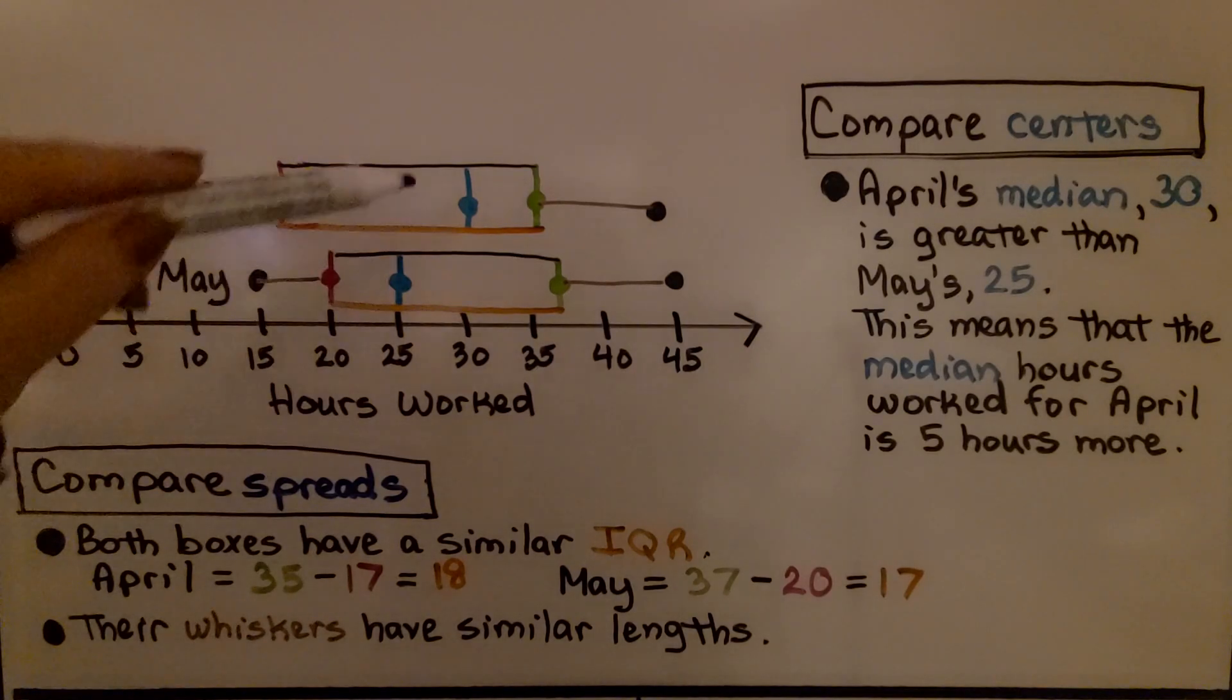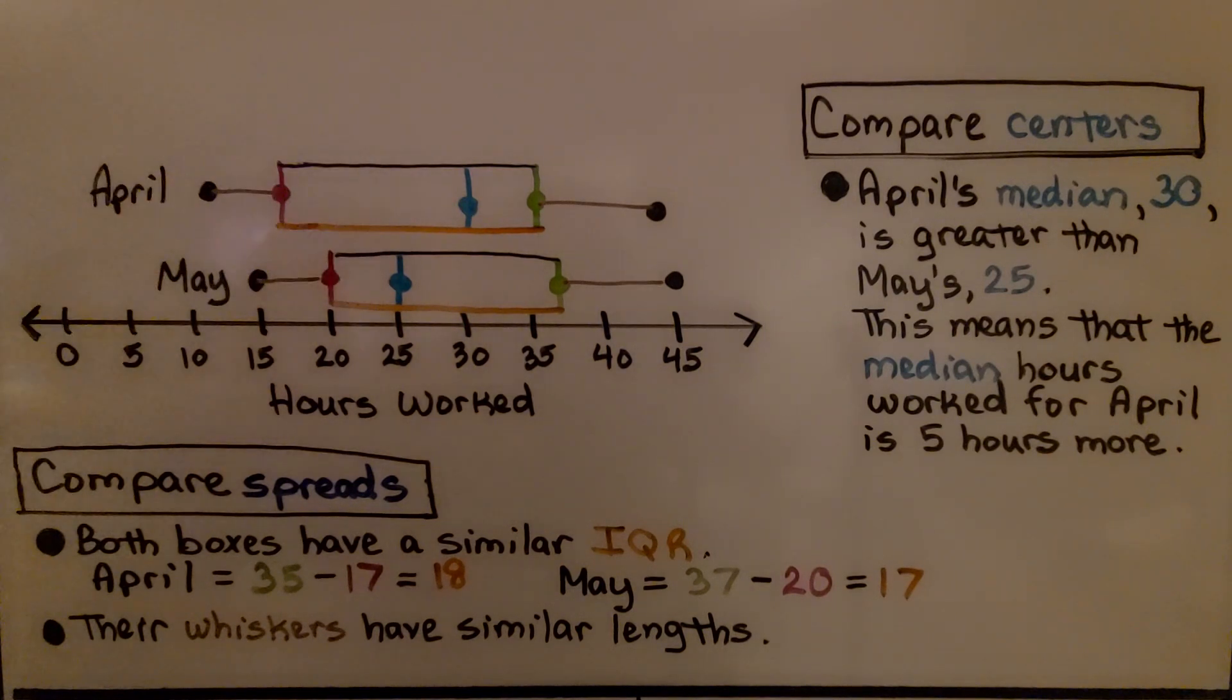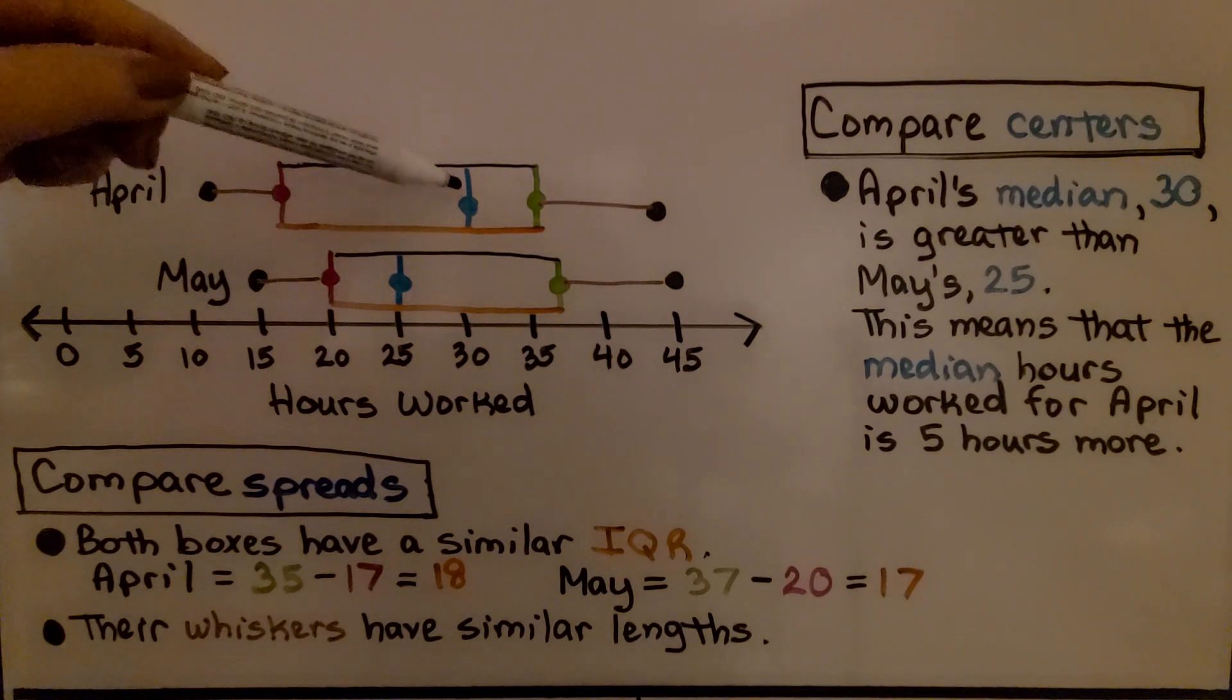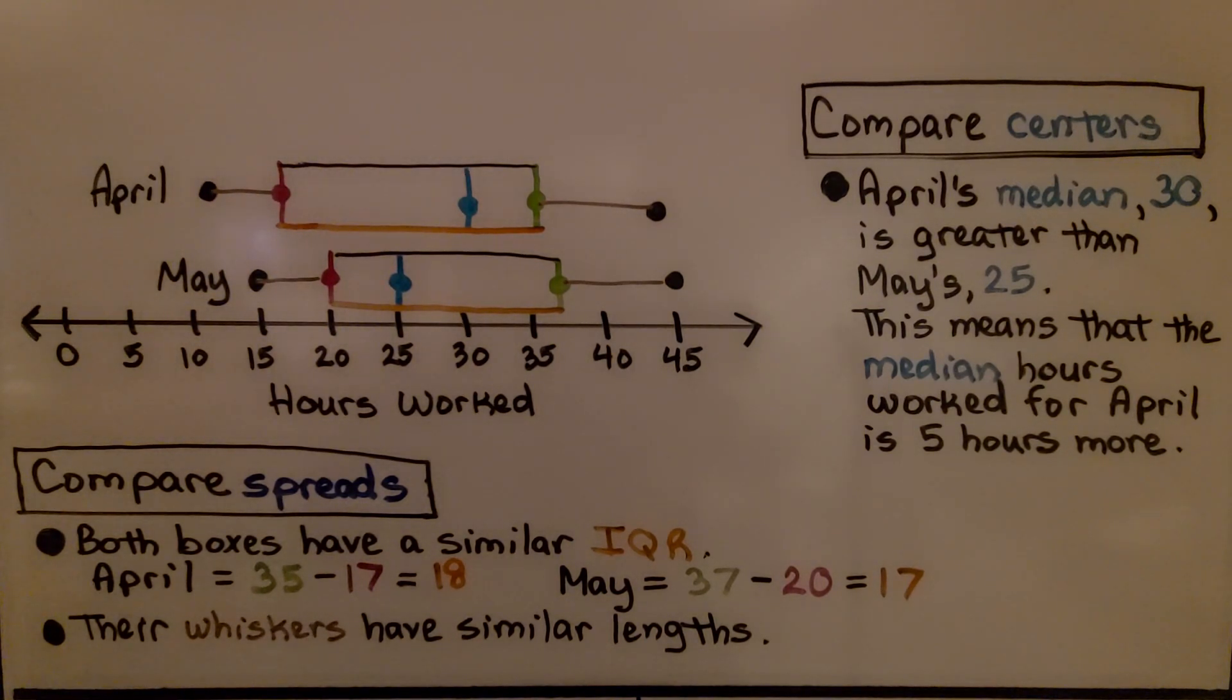Comparing their centers, here's their centers, their medians. April's median 30 is greater than May's, which is 25. This means the median hours worked for April is 5 hours more. Comparing the spreads, both boxes have a similar IQR.